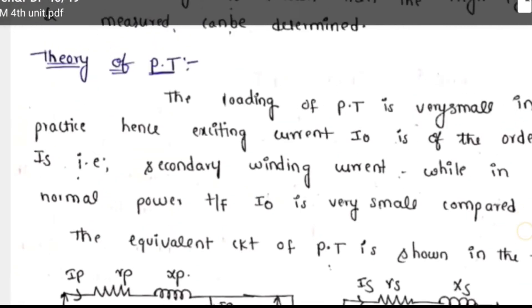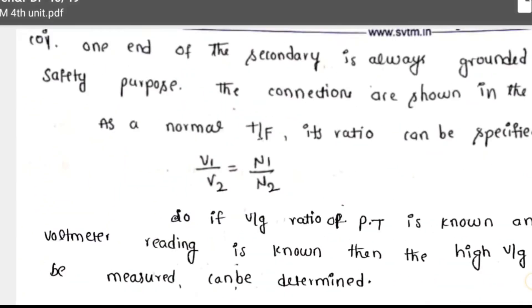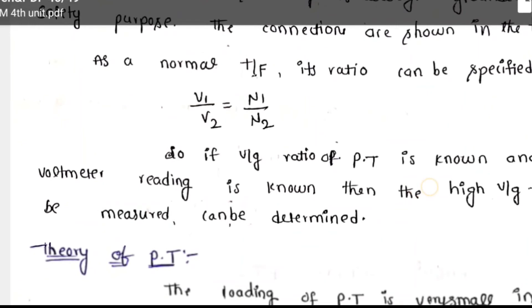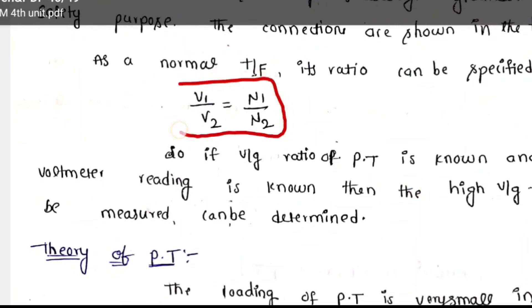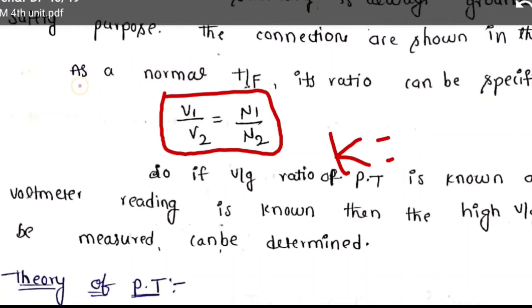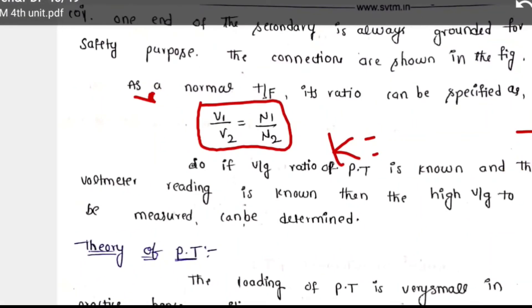What is the theory of a PT? In a normal transformer, V1/V2 equals N1/N2, or V2/V1 equals N2/N1. K equals N2/N1 for a normal transformer. Similarly for PT, the theory on ratio error and phase angle error is similar to that of the current transformer but some modifications are required.